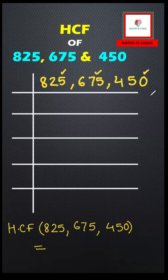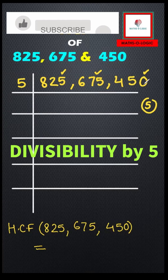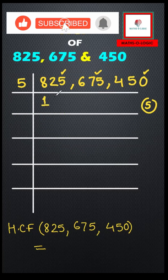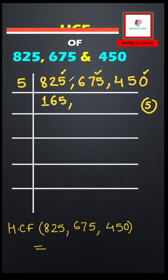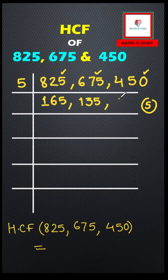I'm going to use the divisibility rule of 5 and divide all three numbers by 5. So 825 ÷ 5 = 165, then 675 ÷ 5 = 135, and 5 × 90 = 450, confirming 450 ÷ 5 = 90.